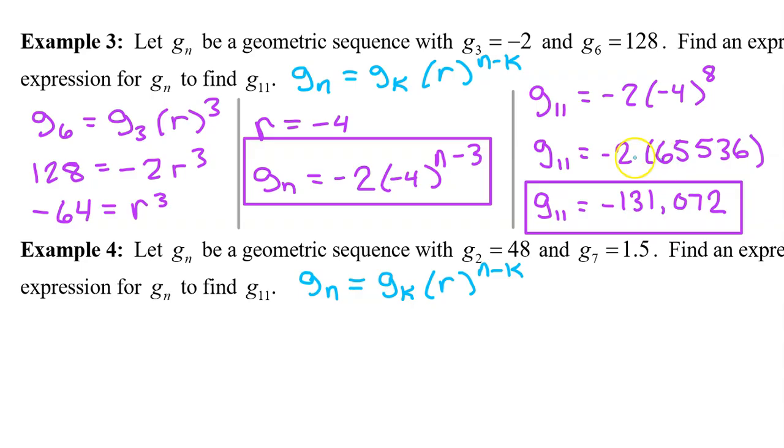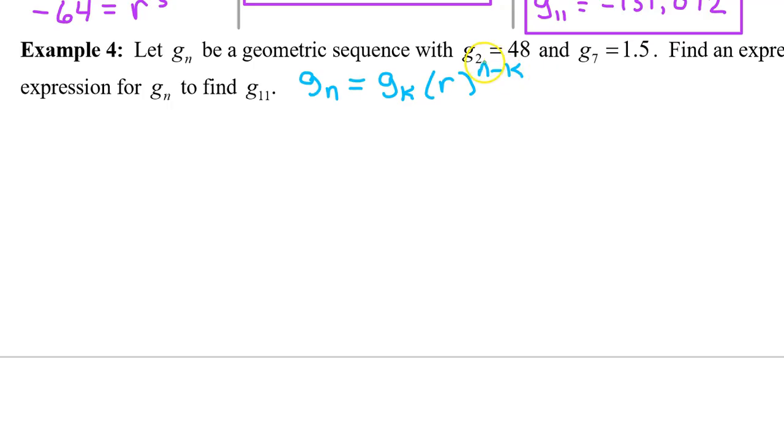To be honest, I used a calculator on that last problem and I'm going to do it again. This is another one where we are not given the common ratio r, but instead we are given two terms of the geometric sequence. Let's plug in g7 for gn and g2 for gk. Always put the larger index in the front. So I will have g7 is equal to g2 times common ratio r to the n minus k power. That's 7 minus 2, which is the 5th power.